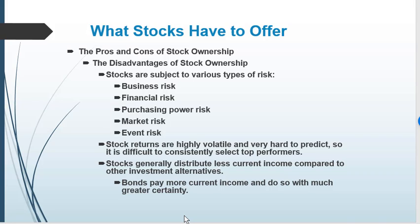The cons are the risk levels — there are so many variables that will have an influence on the stock market. How we create our portfolios and how we ultimately diversify our risks away will be dependent on how much these risks influence our portfolios. Stock returns are volatile and very hard to predict. Stocks generally distribute less current income than some other investment alternatives.